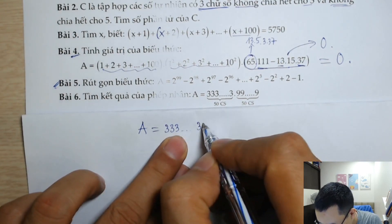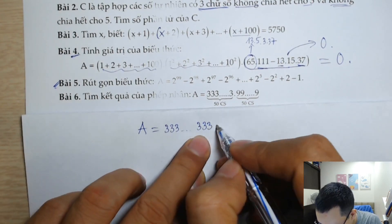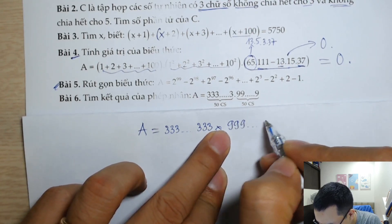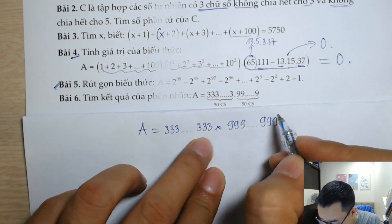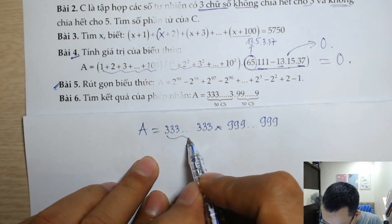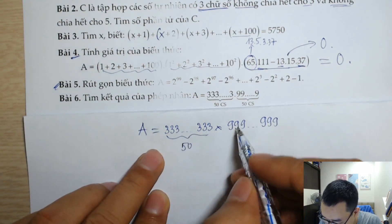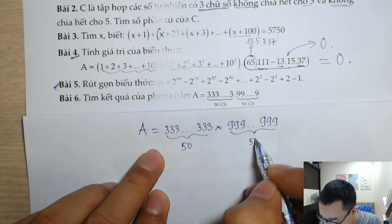333...333, nhân với, thầy viết dấu nhân cho nó bị nhầm lẫn với cái dấu chấm chấm chấm này, 999...999, và chỗ này có 50 chữ số 3, và chỗ này cũng có 50 chữ số 9.